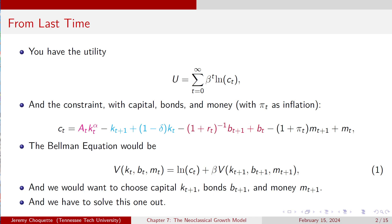Now, the Bellman equation is just V of K_t, B_t, and M_t equals the natural log of C_t plus beta times V of K_{t+1}, B_{t+1}, and M_{t+1}. And we want to choose capital, bonds, and money — specifically K_{t+1}, B_{t+1}, and M_{t+1} — and we've got to solve this out.